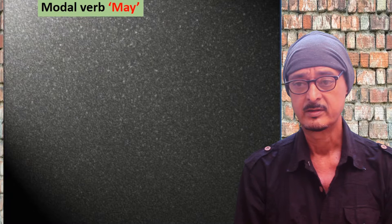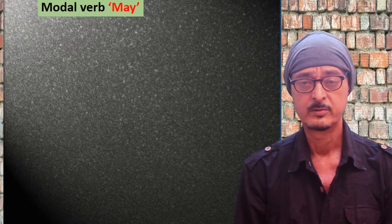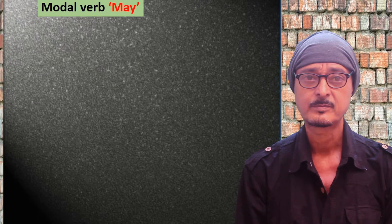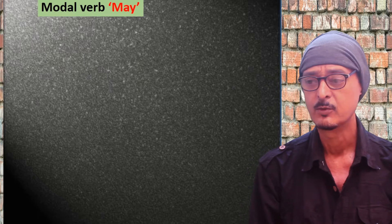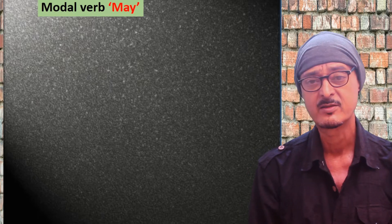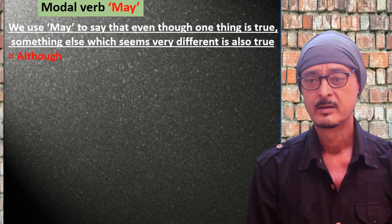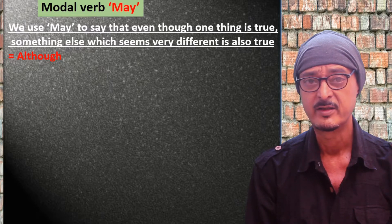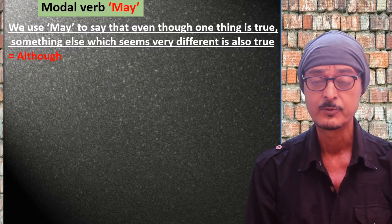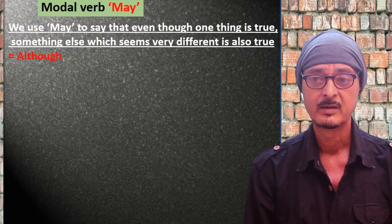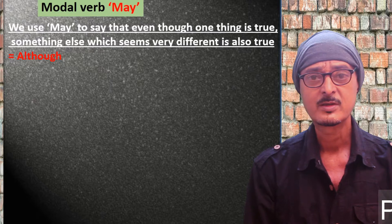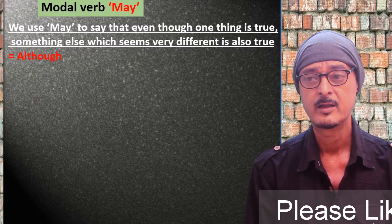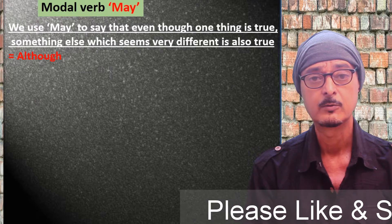The next use is: we use modal verb 'may' to say that even though one thing is true, something else which seems very different is also true. It is similar to 'although'.